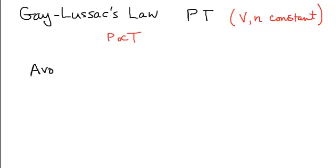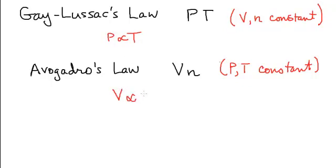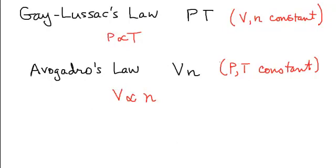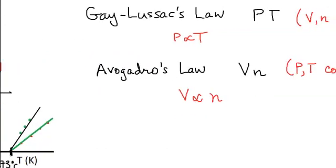The last individual law is Avogadro's Law. You may recall Avogadro from Avogadro's number — 6.022 × 10²³ — the number of items in a mole. Avogadro helped define what a mole was, so you might correctly guess that his gas law involves moles. He was looking at volume and number of moles, keeping pressure and temperature constant. What Avogadro discovered through experimentation is that volume is proportional to the number of moles.